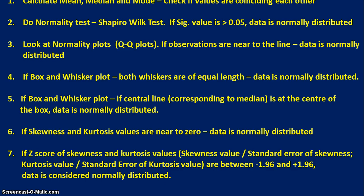The fourth method is to draw a box and whisker plot. If both whiskers are of equal length, the data is normally distributed. Additionally, if the central line corresponding to the median is at the center of the box, the data is normally distributed. If skewness and kurtosis values are near to 0, then also the data is normally distributed.